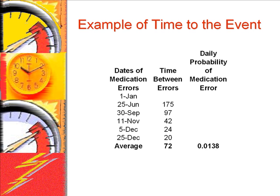For another example, suppose we do not know the frequency of medication errors in our hospital. Suppose that last year there were six reports of medication errors. We can calculate the time between consecutive medication errors. The average time between errors is 72 days. Therefore, the daily probability of a medication error is 1% — thankfully a small probability.